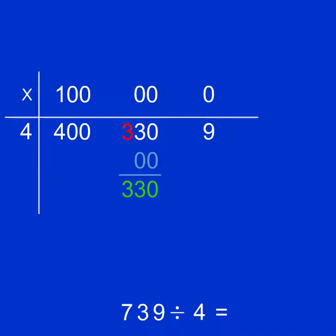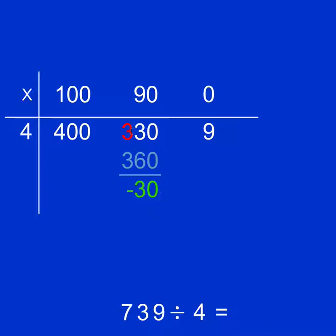Now I've got $330, but there are 33 $10 notes shared between 4 children. I can go through my times tables until I've given out all of my $10 notes. 4 times 8 is $32 in tens, so that's $80 each. If I give them 9, I'll give them $360 — that's too many. So I'm only going to give 8 $10 notes to each child. That's $80 each, leaving me with $10 left over, which I can't share out as $10 notes, so I'll turn them into singles.